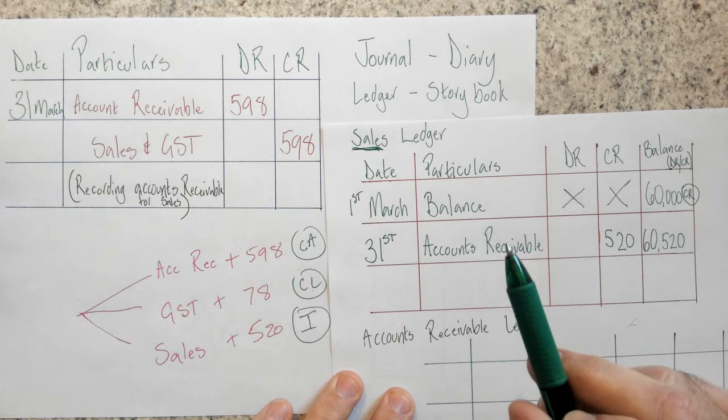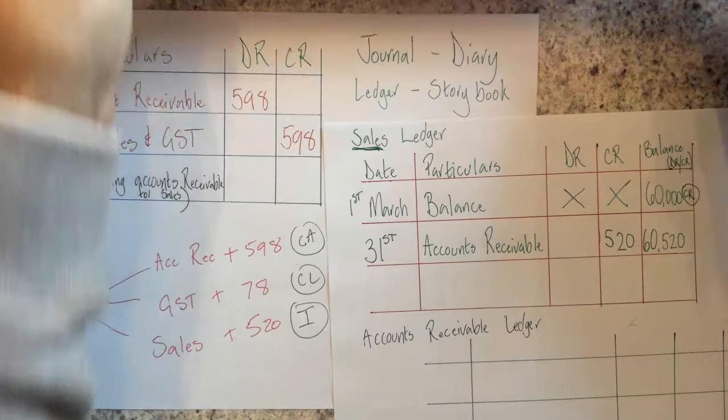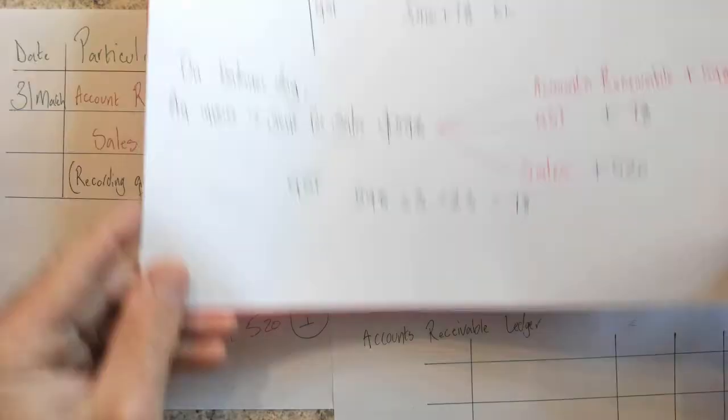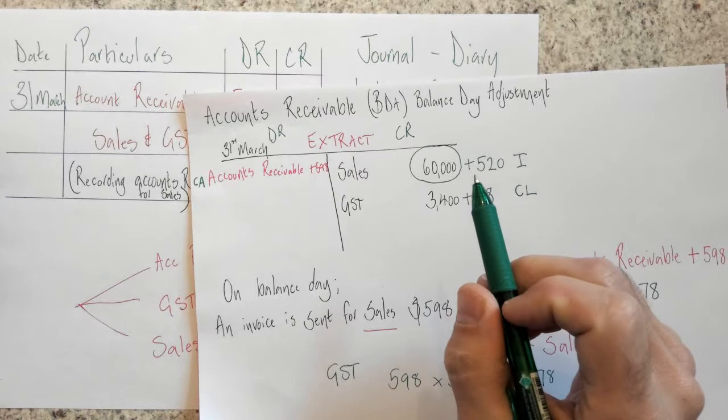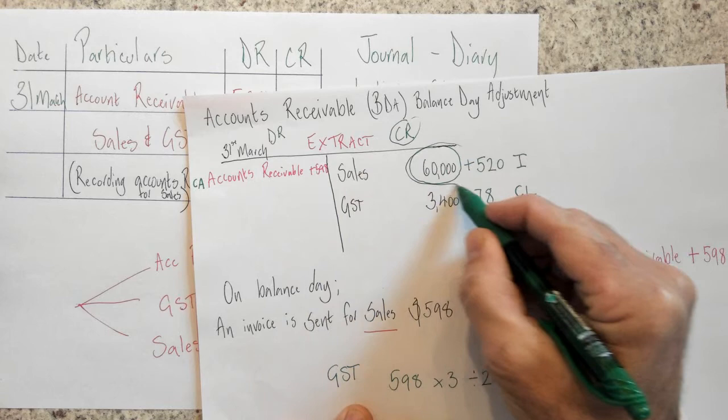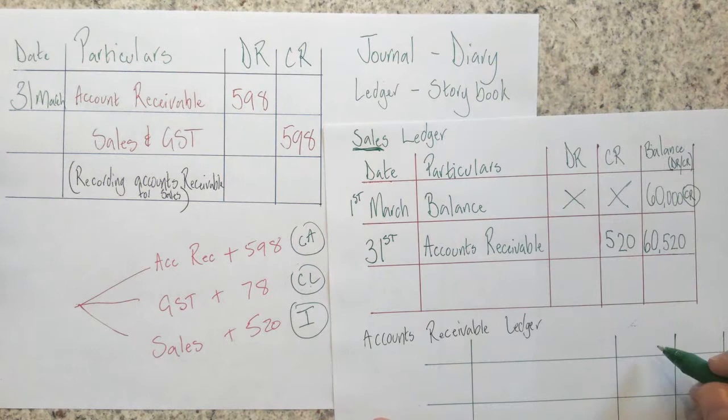So I've got something to enter here. Now, something's happened on the 31st of March. So I'm just going to put the 31st there. I don't need to like March there. That's fine. And I need to put something into the particulars and something into the other columns. Now, something has changed. Something has happened for my ledger to change.